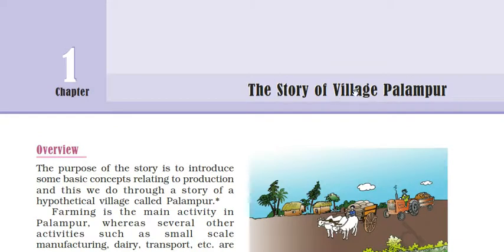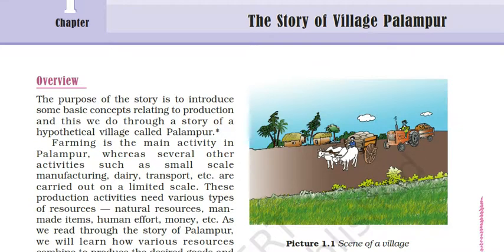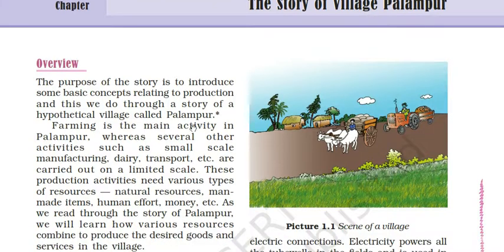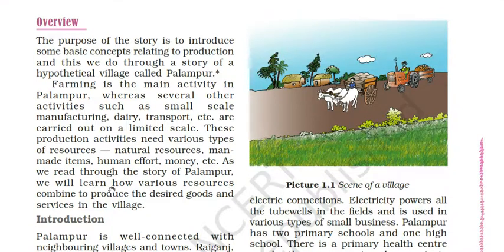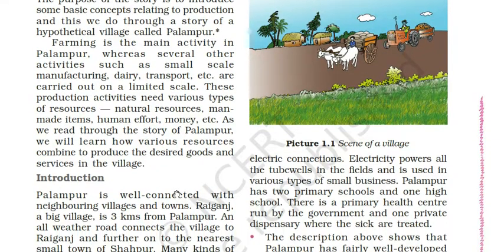Here is the first chapter: a story of village Palampur. The purpose of the story is to introduce some basic concepts relating to production through a hypothetical village called Palampur. Farming is the main activity in Palampur, while several other activities such as small scale manufacturing, dairy, and transport are carried out on a limited scale. These production activities need various types of resources: natural resources, man-made items, human efforts, and money.